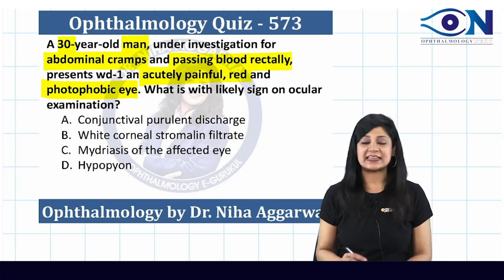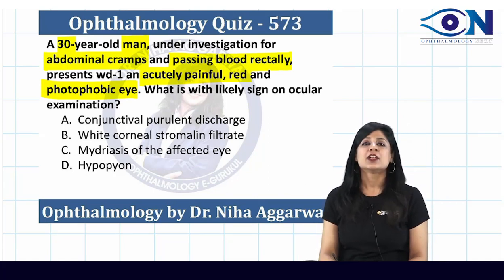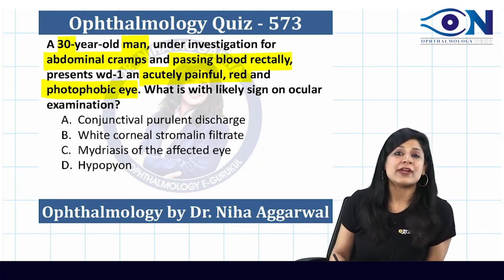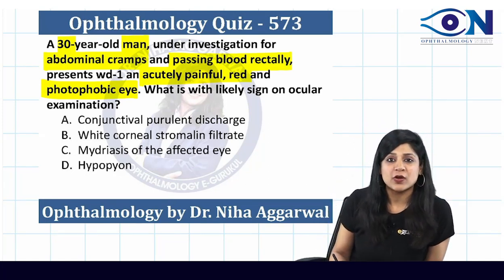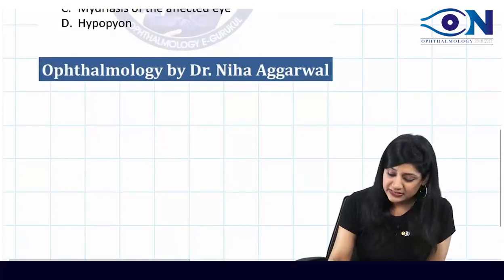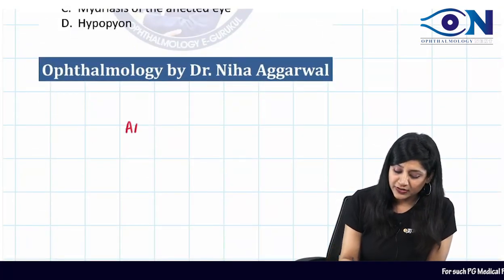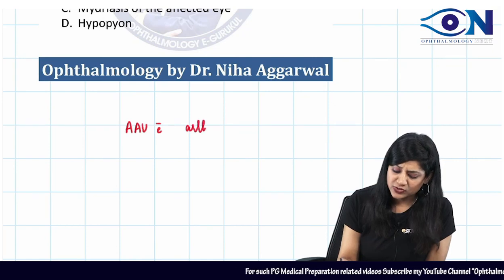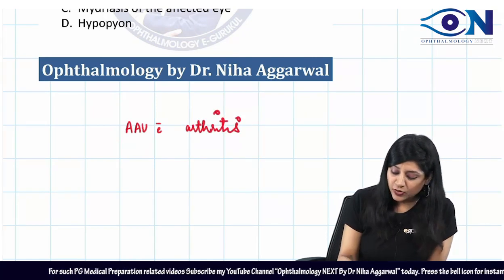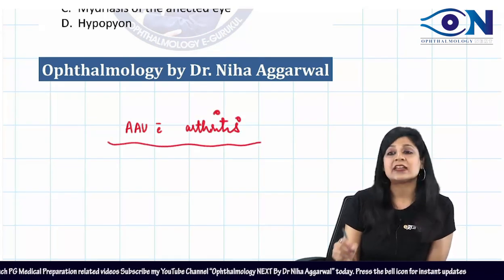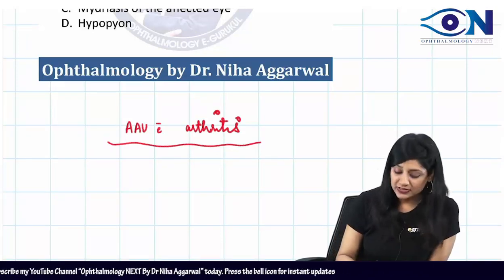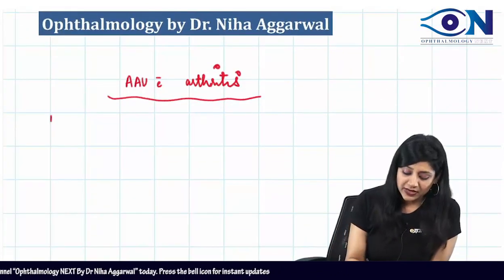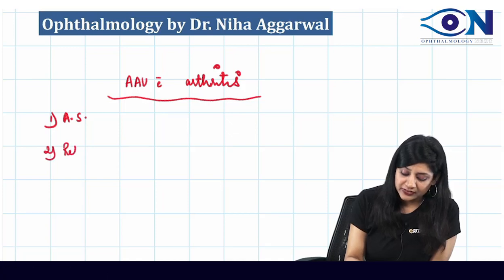If you look at quiz number 571, we had discussed that this is actually a case of acute anterior uveitis with arthritis. This is a similar kind of question. Now in acute anterior uveitis with arthritis, we can have ankylosing spondylitis, or we can think of Reiter's syndrome.